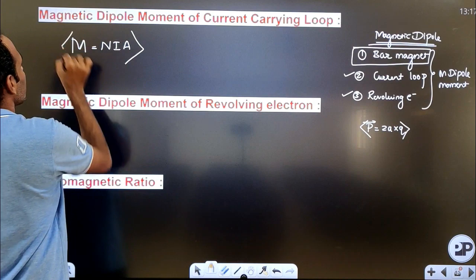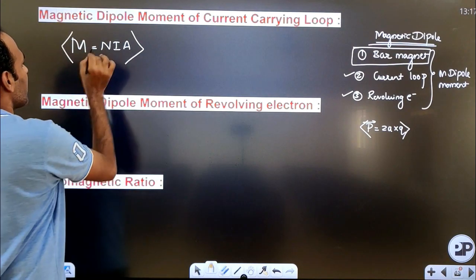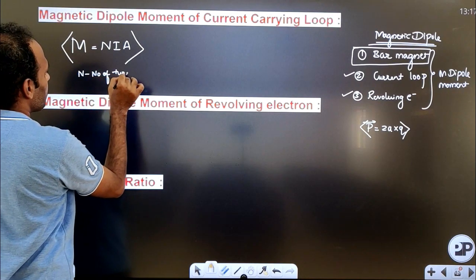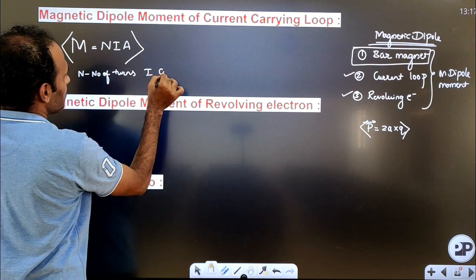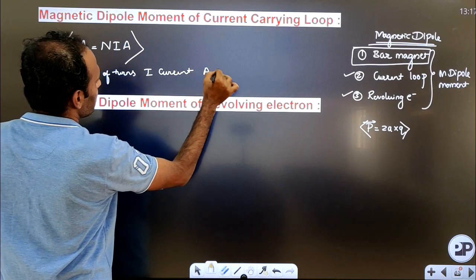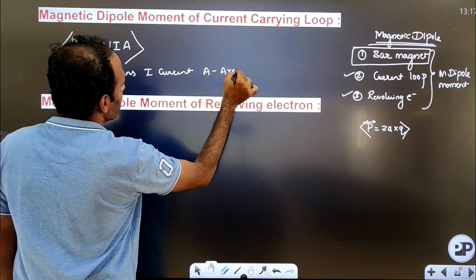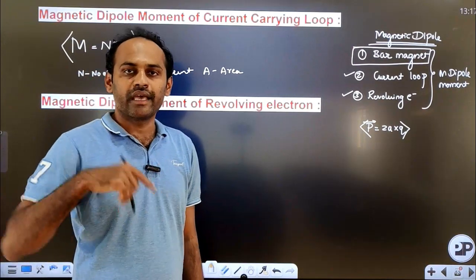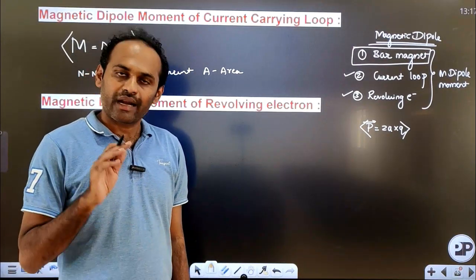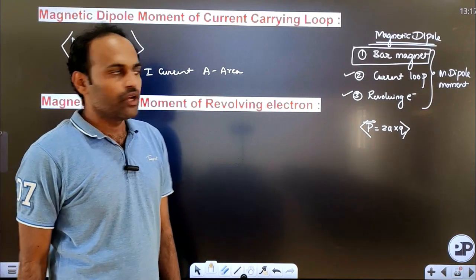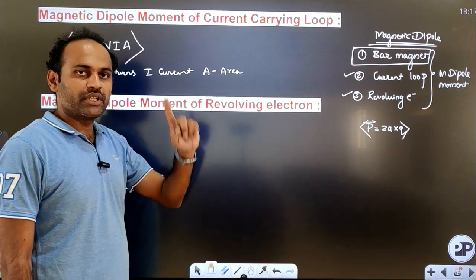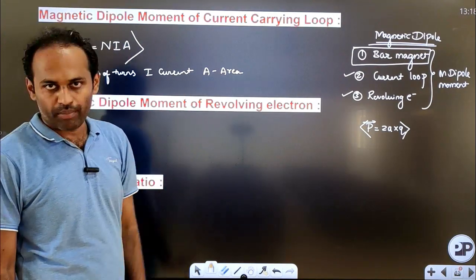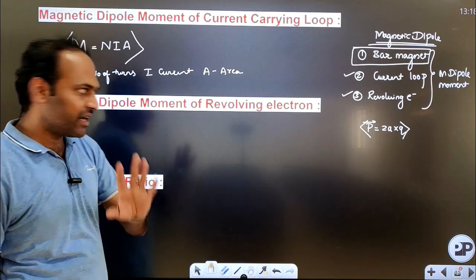Where N is the number of turns, I is the current, and A is the surface area of the loop. For a circle, apply the formula A = πr². For a square, apply the square area formula. For a triangle, apply A = ½ × base × height. Whatever shape the loop is, apply the corresponding area formula.